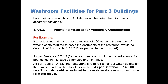As per Table 3743-D, the restaurant is required to have three water closets for the females and three water closets for the males. As per sentence 3742(3), two urinals could be installed in the male washroom along with one water closet.